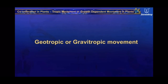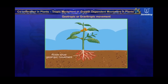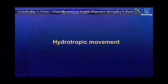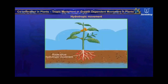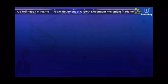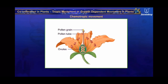Geotropic or gravitropic movement is the movement or growth in response to gravity. The roots of plants show geotropic movement as they grow in the direction of the gravitational pull. Hydrotropic movement is the movement or growth in response to water; roots always bend towards water. Chemotropic movement is movement in plants in response to chemicals. The growth of the pollen tube towards the ovules is an example of chemotropic movement.